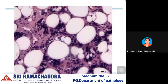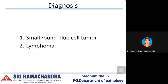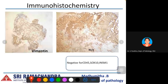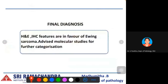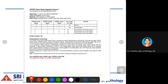A differential diagnosis of small round blue cell tumor and lymphoma was given. IHC was performed: vimentin and FLI1 positive, negative for CD45 and SOX10 and INSM1. CD45 was done to rule out lymphoma and INSM1 as a neuroendocrine marker. The final diagnosis was: H&E and IHC features in favor of Ewing sarcoma. Molecular studies were advised for further categorization. The FFPE specimen was sent for FISH analysis and was positive for EWSR1 translocation, confirming Ewing sarcoma.